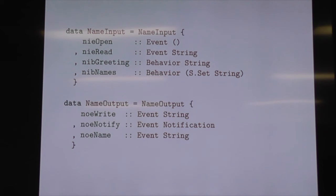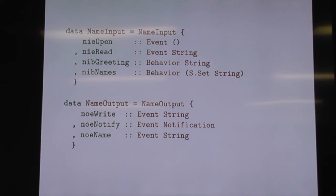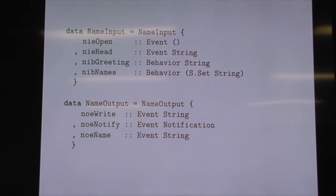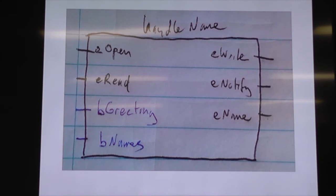We have our IO events — open and read. We have our message of the day greeting string. Why not make it a behaviour? It's an applicative so you can always use pure and just hand a constant in — this way, someone can change the message of the day later and it just works. And we have the behaviour of the set of names of people already logged in. For our output, we have write, errors for dodgy names, notifications like 'Dave has joined the channel', and the name event — when someone has finally selected a valid name after stumbling through validation, we fire something off saying this is their name.